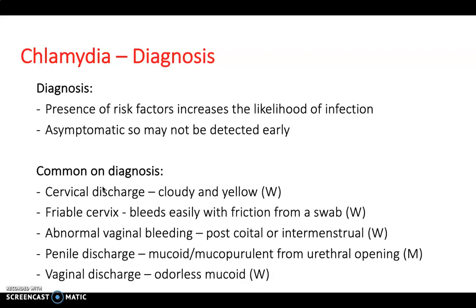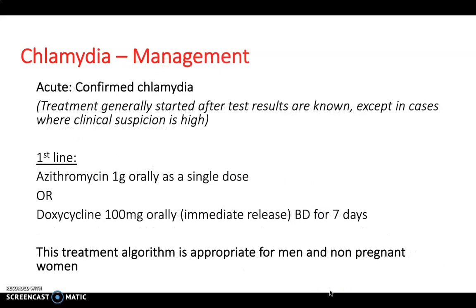How is chlamydia diagnosed? The presence of risk factors alone increases the likelihood of infection. Because it can be asymptomatic, it may not be detected early — which is why we talked about commencing treatment before a definitive diagnosis. It's important to recognise common symptoms for both men and women. First-line treatment is azithromycin 1g orally as a single dose, or doxycycline 100mg orally twice a day for seven days.